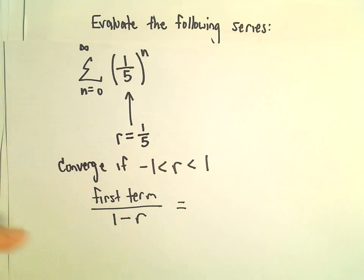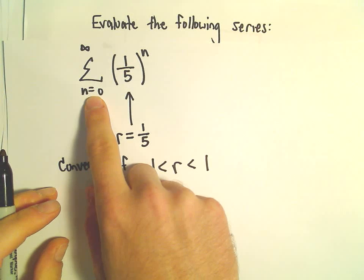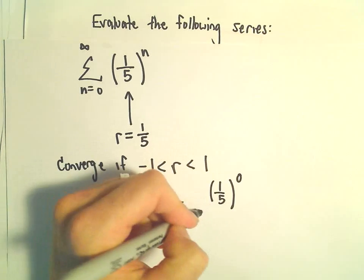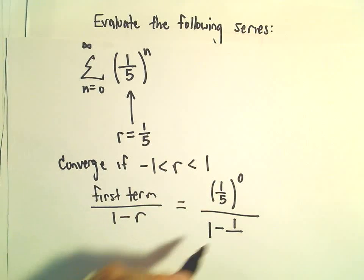And in this case, let's see, if we plug in n equals 0, that's how we'll get our first term. We'll have just 1 fifth raised to the 0 over 1 minus the r value, which is 1 fifth.